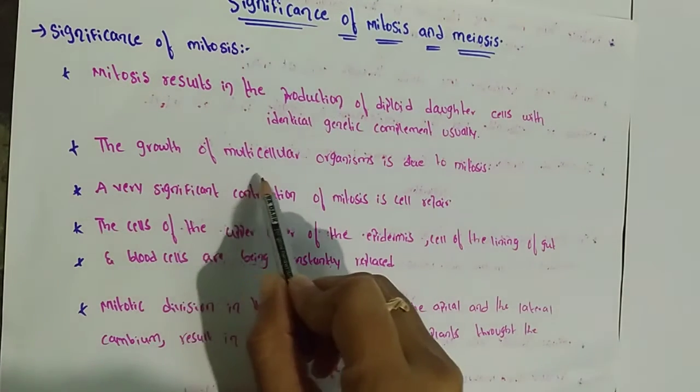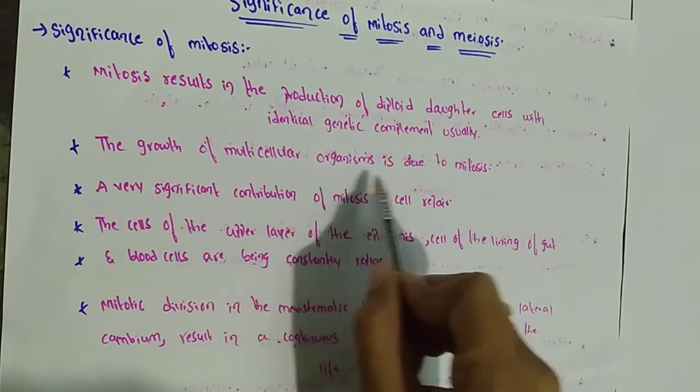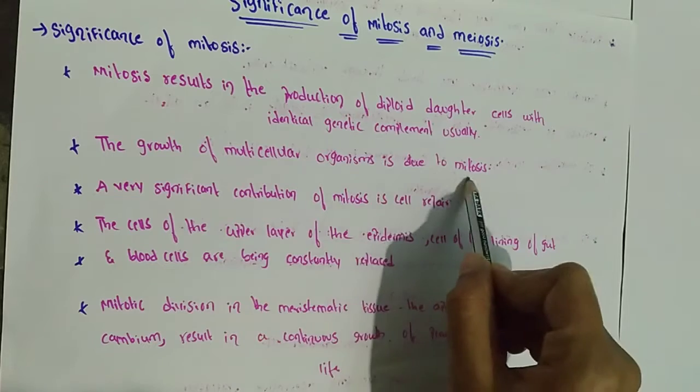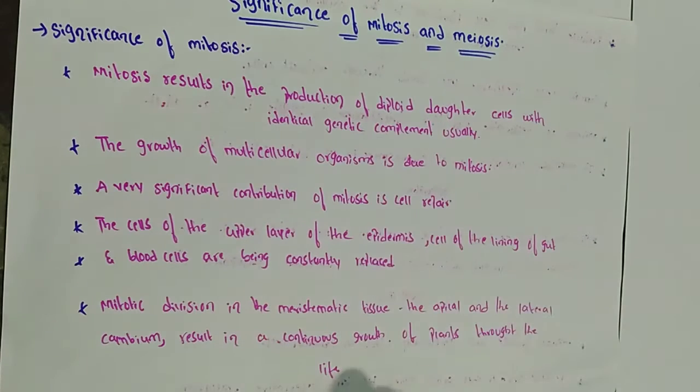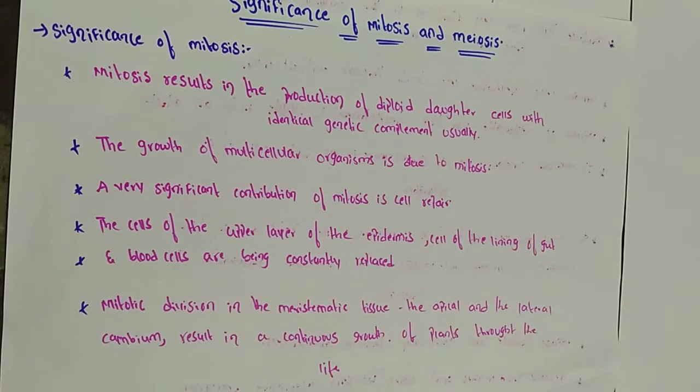The growth of multicellular organisms is due to mitosis. Multicellular organisms will grow due to the mitosis cell division type.